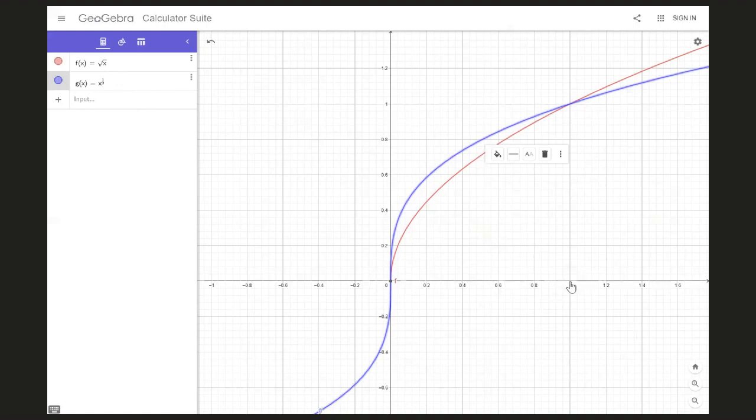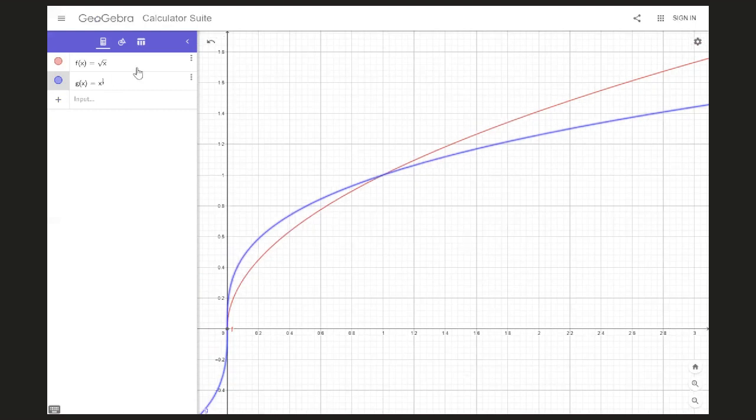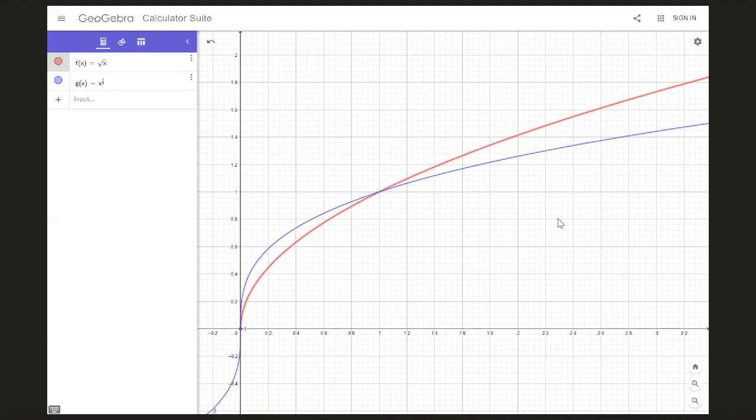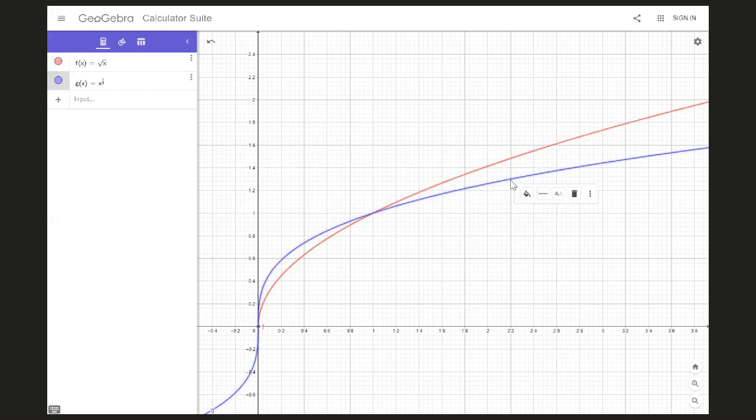And then after one, what happens? After one, then this reddish function is on top. The square root of x is on top, and then it stays that way forever. Remember with big O, we only care about what eventually happens. We only care about what happens for large values of x or for your inputs.